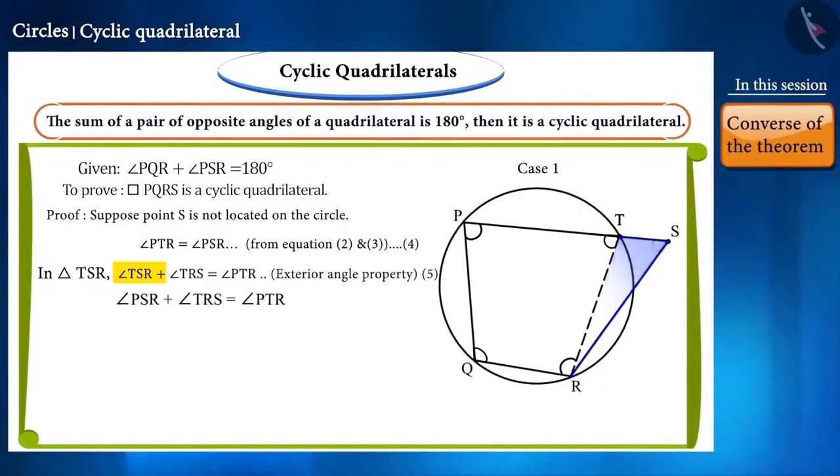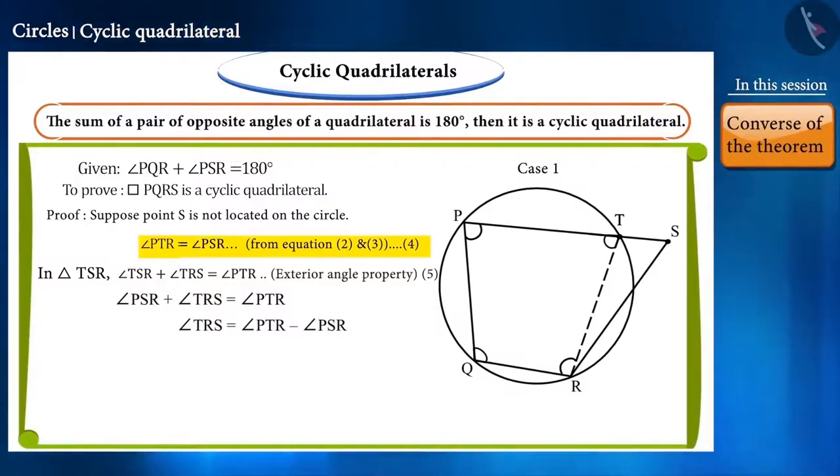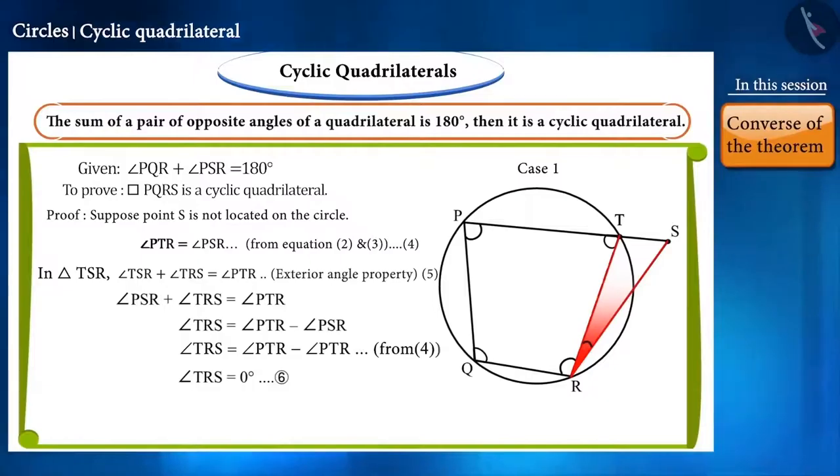We can also call angle TSR as angle PSR. And we can see in equation 4 that angle PSR and angle PTR are equal. Therefore, we get that the value of angle TRS is 0.